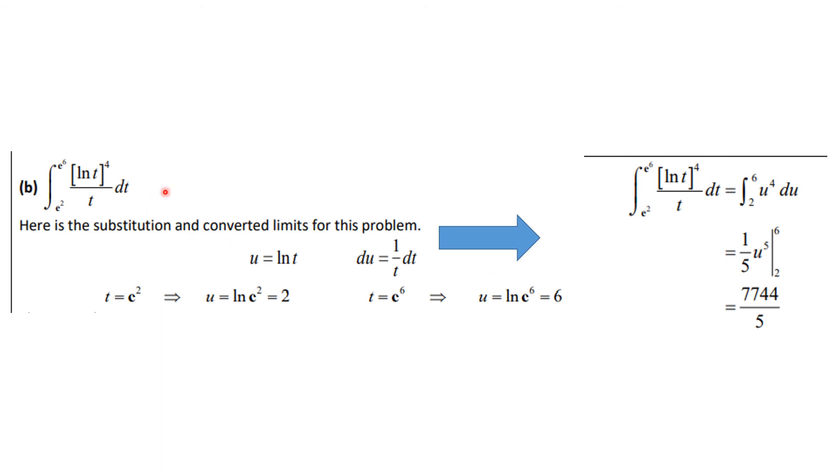Okay, so here was the integral we had to start with. This is the substitution that we'll do. U is ln of t, du is 1 over t dt. When t is e squared, u is 2. When t is e to the 6th, u is 6. So this integral becomes the integral from 2 to 6, u to the 4th du. U, integrate that, it's 1 5th u to the 5th, plug in those numbers, and I get this as my final answer.